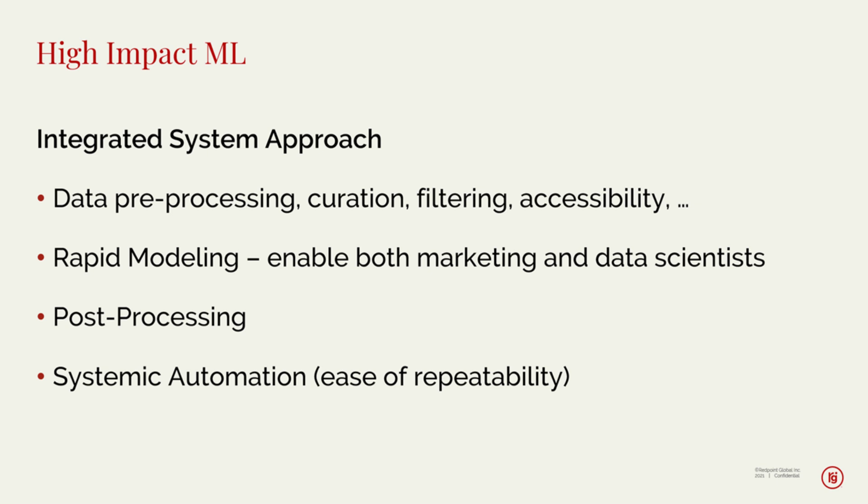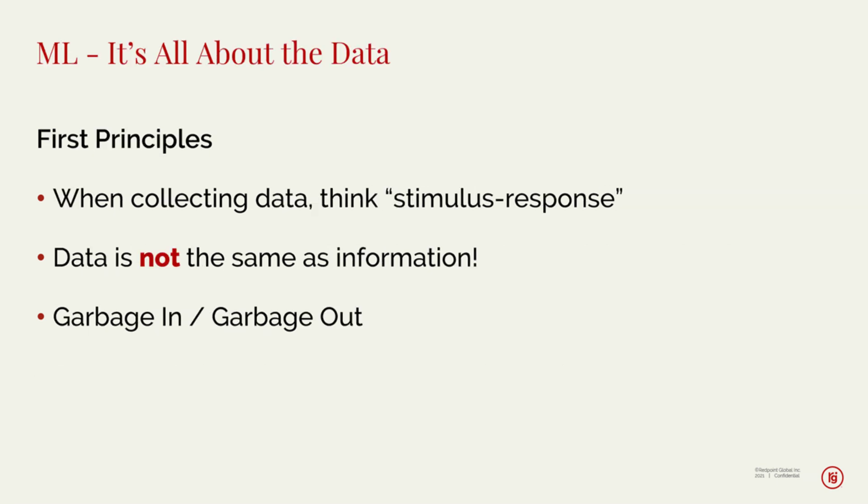The automation part is key. If you make automation systemic, you get the ease of repeatability to do much more in a much more efficient manner. Data is not the same as information — people often collect a lot of stuff that may not be pertinent, and garbage in means garbage out. It helps to think about stimulus-response pairs: the message is the stimulus — the content, font, placement, and frequency — and you figure out what the response is. That response then feeds back as a cycle, telling you whether you did well and what you need to change.